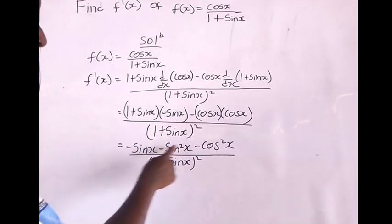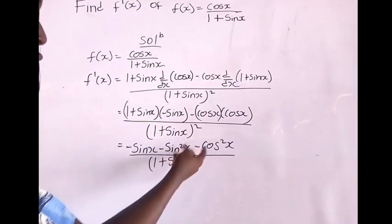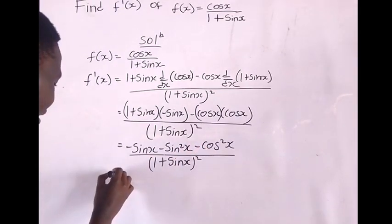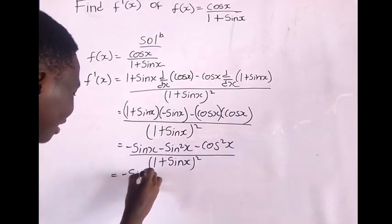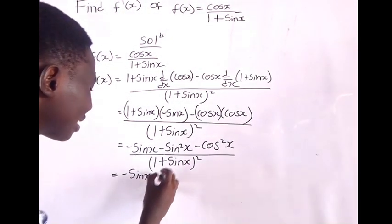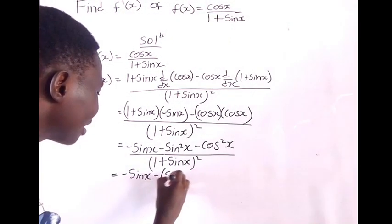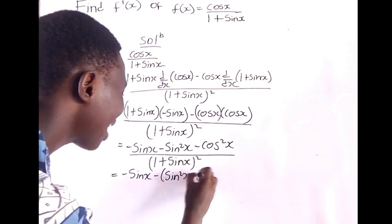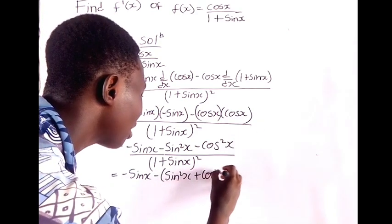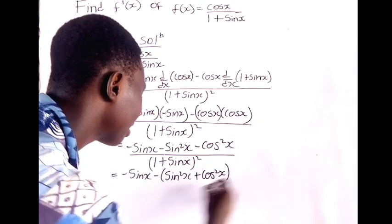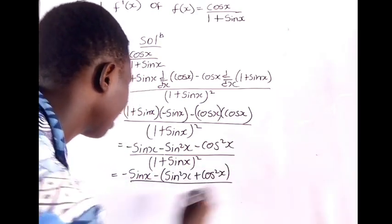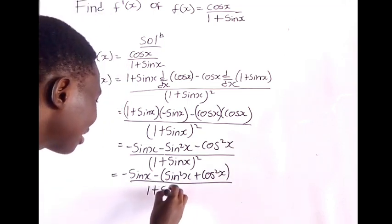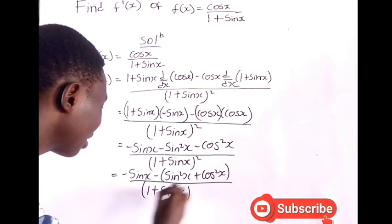We have a double negative here, so we can factor out the negative to get: −(sin x + sin²x + cos²x), all over (1 + sin x) squared.